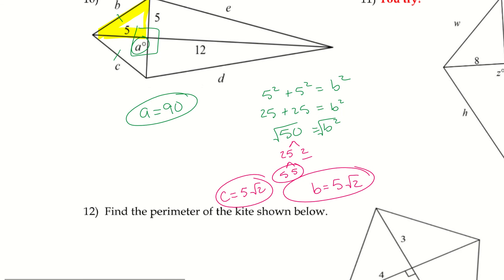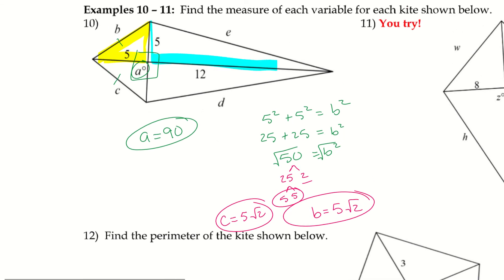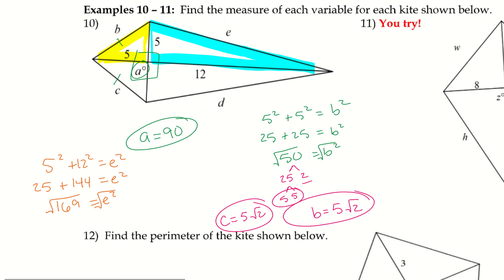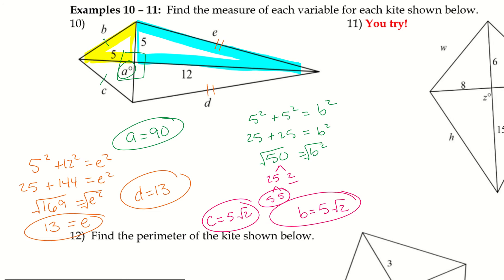For the larger triangle in example ten, I have legs 5 and 12, so 5² + 12² = e²: 25 + 144 = 169 = e², and since 169 is a perfect square, e = 13. The consecutive sides are congruent, so d = 13. Go ahead and try number eleven — use Pythagorean triples if you recognize them.